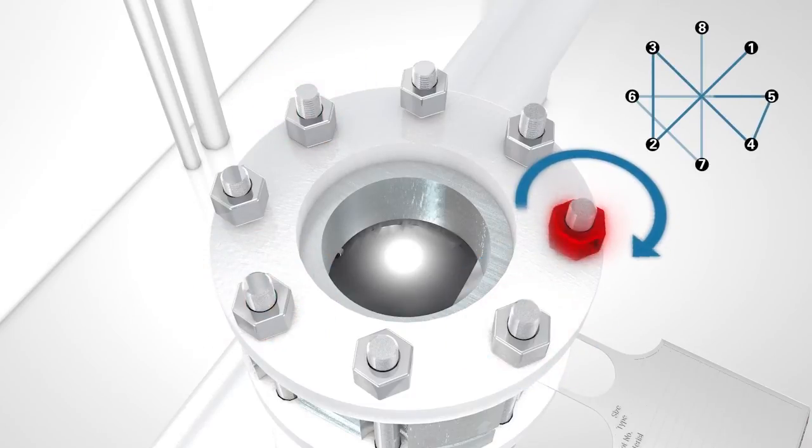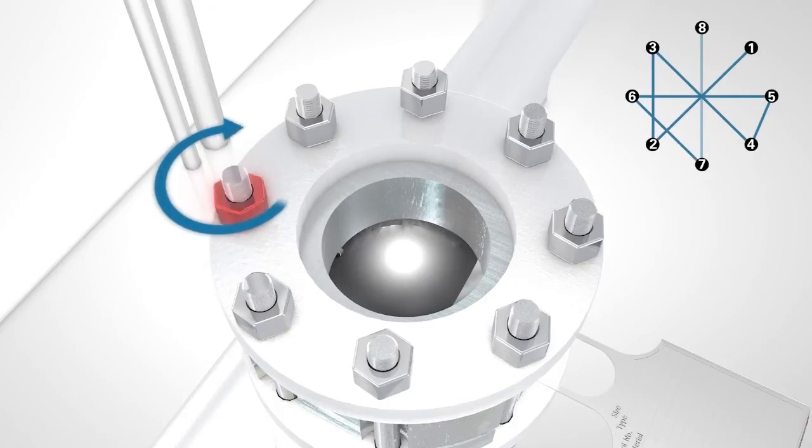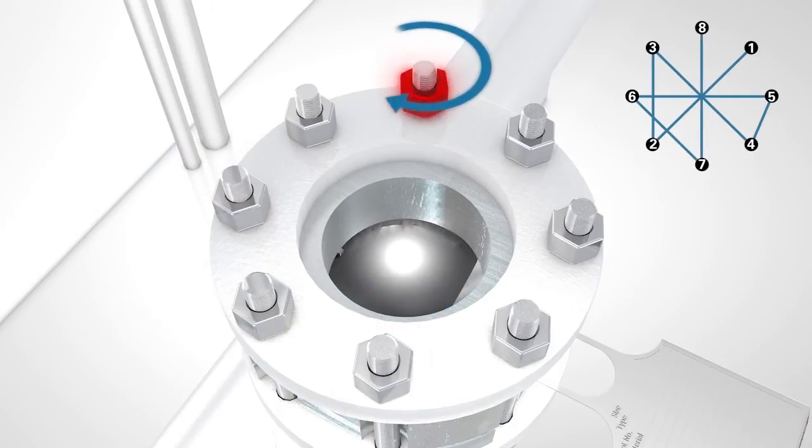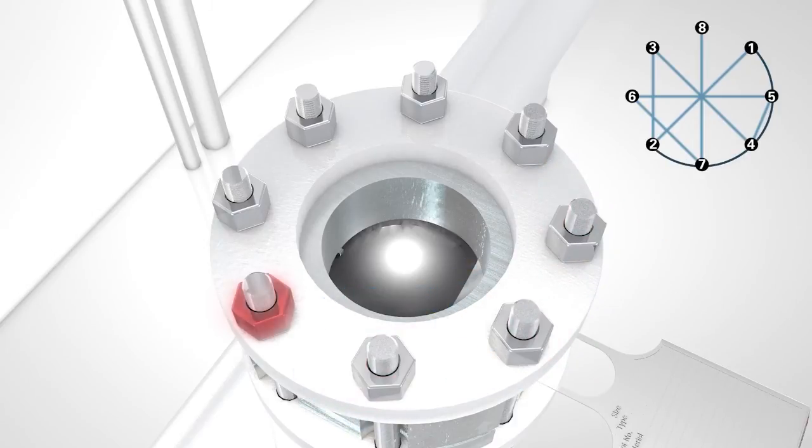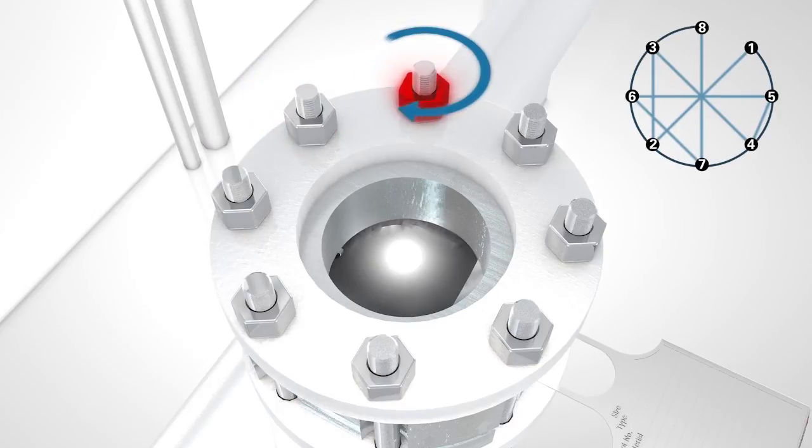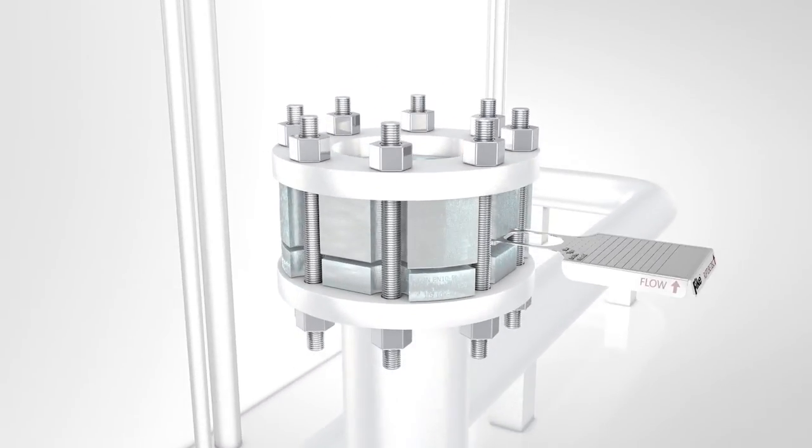After each torque step, check the gap between the base and hold-down to be sure it is still equal. After the final torque step has been completed, make one revolution around the flange to ensure each stud has received the correct amount of torque.